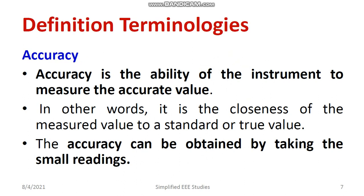Let's understand what accuracy means. Accuracy plays a major role in every type of measurement device. It is the ability of the instrument to measure the accurate value — specifically, it is the closeness of the measured value to a true or standard value. A standard value is already set, and you measure different readings and check their closeness to that standard value. Some instruments specify 0.1% or 0.2% accuracy, indicating how close the reading is to the true value.